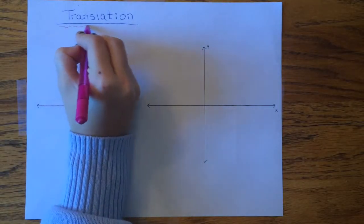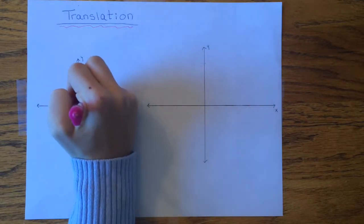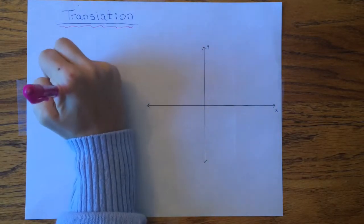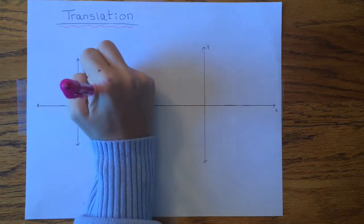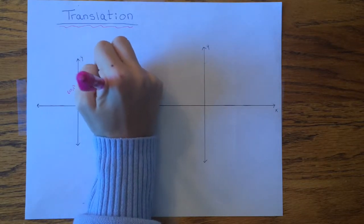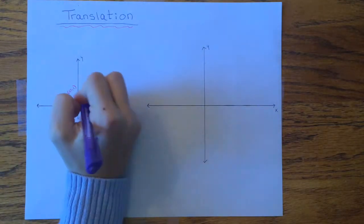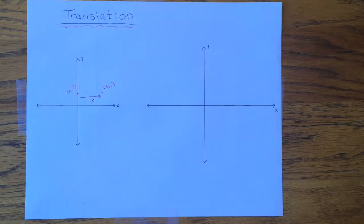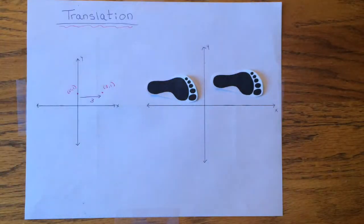The first operator is translation. The translation operator acts by taking each point in the original image and moving it a specified distance along the x-axis. For example, using a translation distance of three units, the point would be translated. Here we see that the original image has been translated a distance of three units along the positive direction.